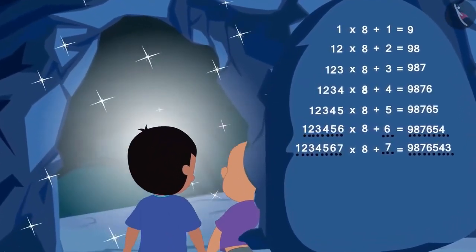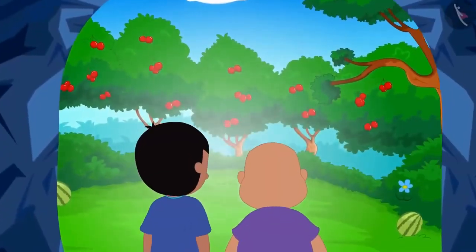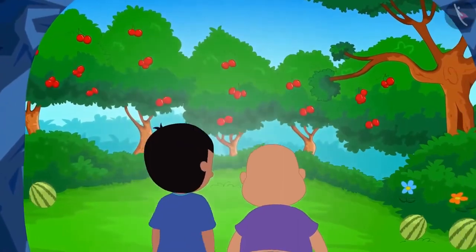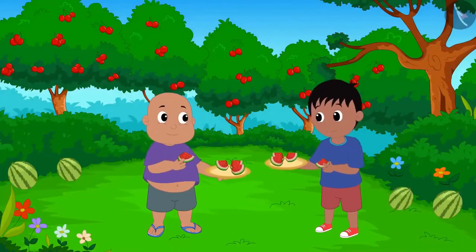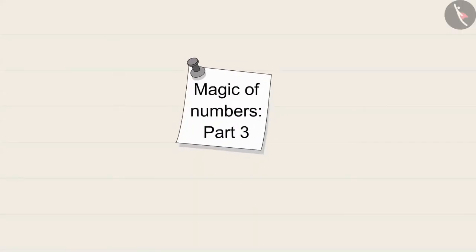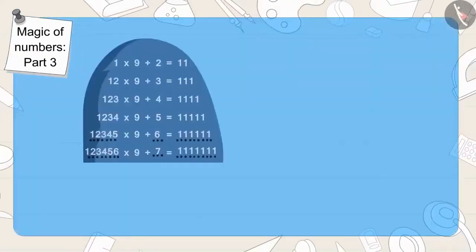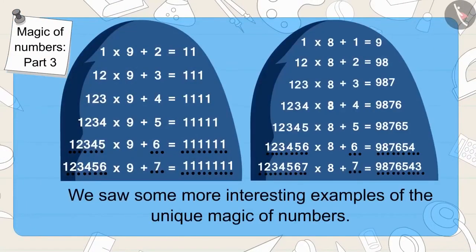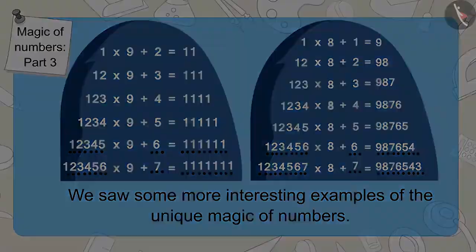Just like you, Raju and Bablu filled in the blanks of this number pattern and the door opened. After passing through the door, Raju and Bablu reached a unique world of fruits. Children, in this video we saw some more interesting examples of unique magic of numbers.